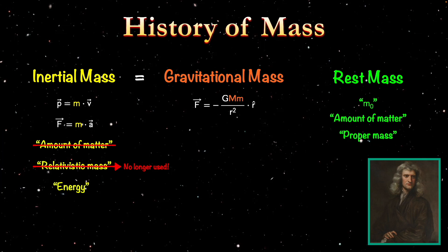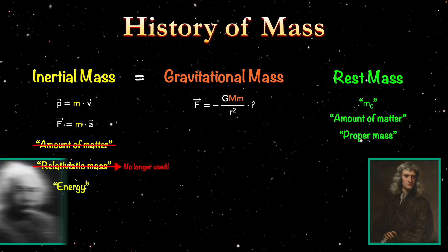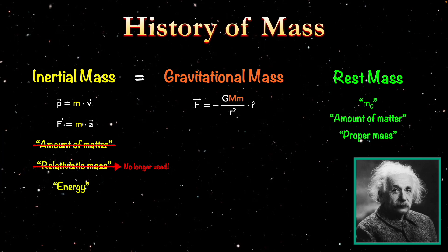The confusion really started when Einstein's theory of special relativity superseded Newton's laws, in the process modifying the way Newton thought of mass. Specifically under Newton we had two types of mass: the inertial mass, which could be thought of as the quantity that makes it difficult to change an object's motion, or as the amount of matter in an object.